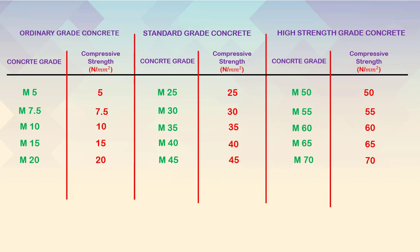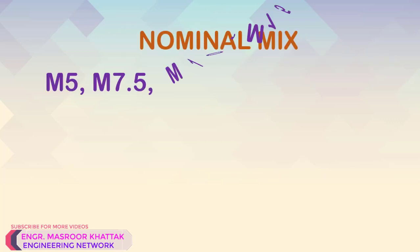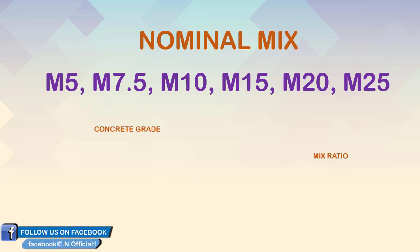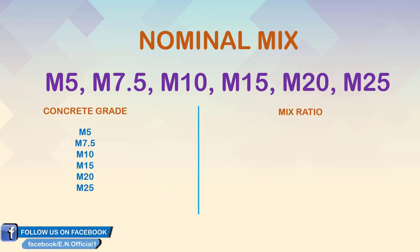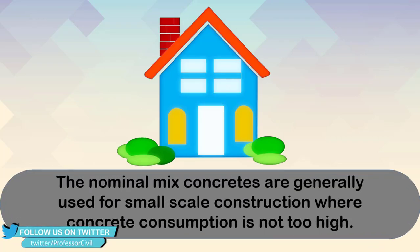Each grade of concrete represents some mix ratios. In general, there are two types of concrete mixes: nominal mix and design mix. Nominal mixes are those whose mix ratios are predefined, and they include grades of concrete from M5 to M25. The nominal mix ratios are displayed on the screen and are generally used for small-scale construction where concrete consumption is not too high.